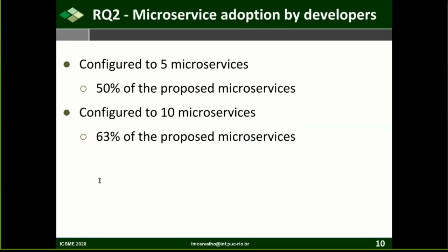In addition to the quantitative study, we also asked developers of the industrial system if they would adopt the microservices generated by µTosca. In total, eight developers were surveyed. All of them, when µTosca was configured to generate five microservices, would adopt at least half of the microservices. The other four developers adopted 60 percent when µTosca was configured to generate ten microservices. Although there is no consensus on the appropriate level of granularity, µTosca was able to generate adoptable microservices for experienced developers in this industrial case study.